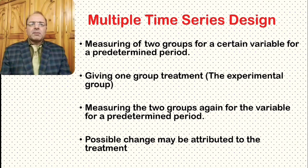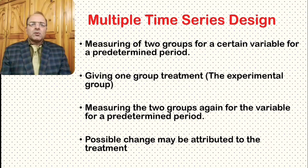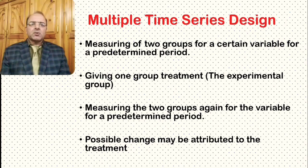The multiple time series design: in this research design, two groups are measured on a particular variable for a predetermined period of time. One group is then given treatment — that group becomes the experimental group. Then both groups are again measured on that variable for a predetermined period of time, and any possible change may be attributed to the treatment.